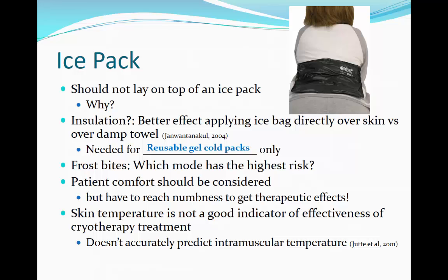Skin temperature is not a good indicator of the effectiveness of cryotherapy treatment programs. Remember that the skin is the first structure to cool, but the target tissue is located much deeper than the superficial structure of the skin. The skin is not an accurate predictor of intramuscular temperature. The best way to measure intramuscular temperature is to place a thermometer within the muscle itself. Placing a thermometer within the muscle is not practical for everyday clinical use, so we use evidence-based medicine and base our protocols off research to figure out what is best for our patients.